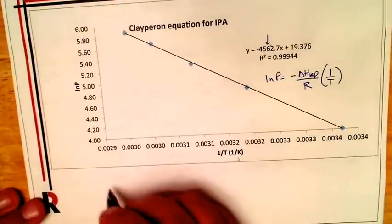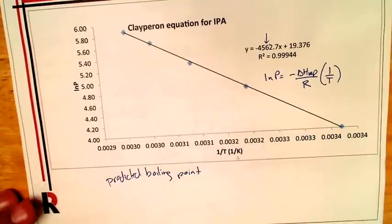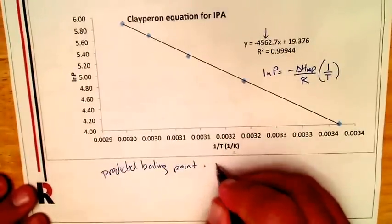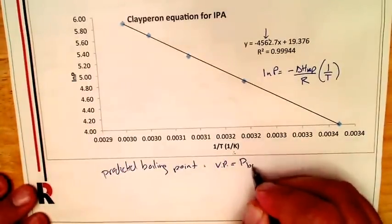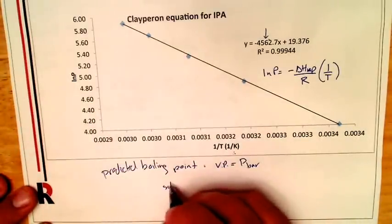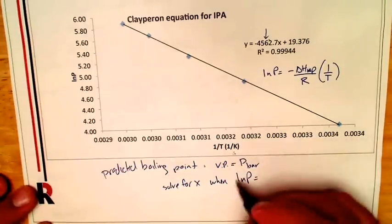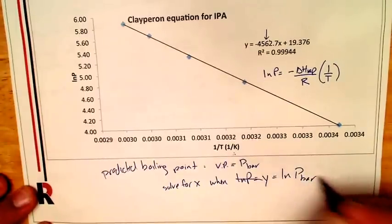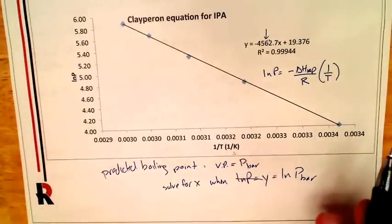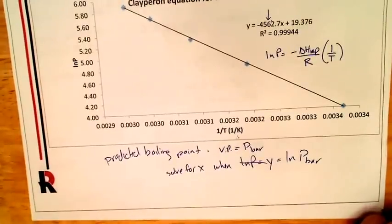Now the other thing we need to do is get the boiling point. If you're going to get a predicted boiling point, then that's going to be equal where the vapor pressure equals the atmospheric pressure. So in that case then, solve for X when natural log of P, when Y equals the natural log of P bar. Now remember, X is one over T, so then you're going to have to convert it over. We should be able to figure that out relatively straightforwardly. And then compare that to your, you can look up the boiling point. It's not that hard for your liquid and compare it and see how accurate you are.